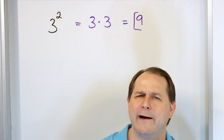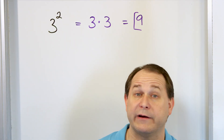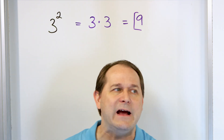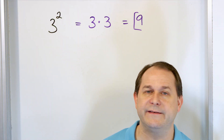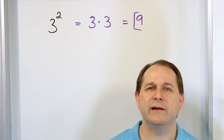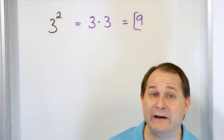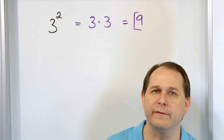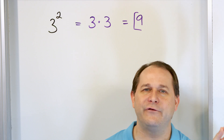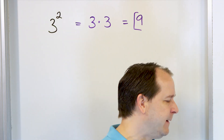Now you might say, why do I care about that? It doesn't seem so helpful. You're just going to have to trust me that when we get a little farther in math, exponents pop up all over the place in our equations. One simple example: when you calculate how much gravity is between two objects like the Earth and the Moon, there's going to be a square — an exponent of 2 — in that calculation. It pops up in nature all the time.